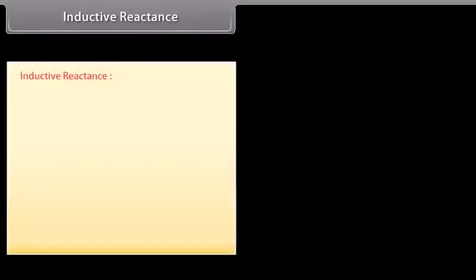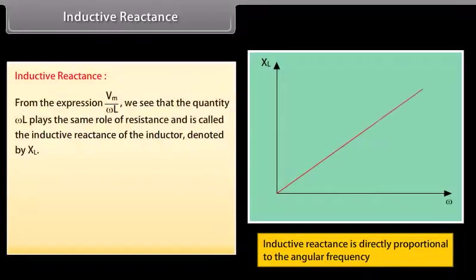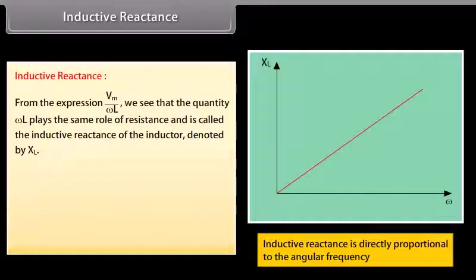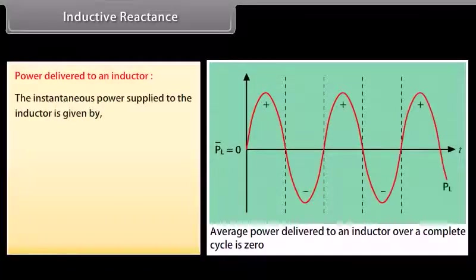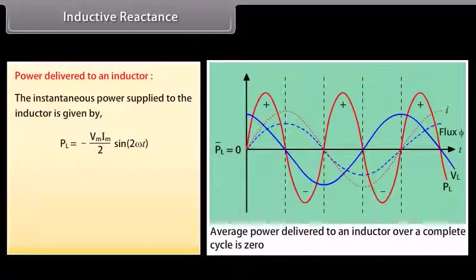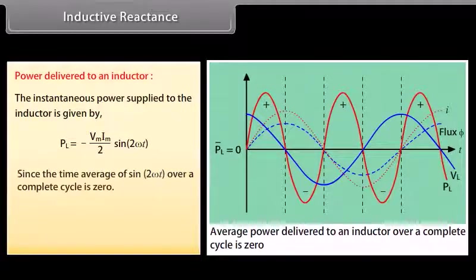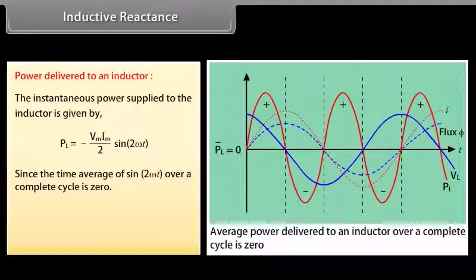Inductive reactance: from the expression Vm/(ωL), we see that the quantity ωL plays the same role as resistance and is called the inductive reactance of the inductor, denoted by XL. XL = ωL. The amplitude of the current in a purely inductive circuit is given by Im = Vm/XL. Power delivered to an inductor: the instantaneous power supplied to the inductor is given by −(Vm × Im/2) × sin(2ωt). Since the time average of sin(2ωt) over a complete cycle is 0, therefore inductor power is equal to 0.